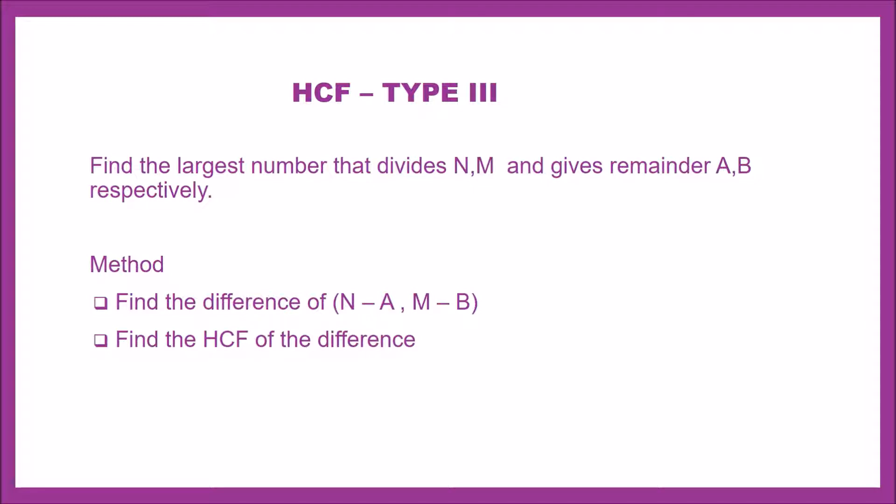When N divided gives remainder A, and M divided gives remainder B, first find the difference of N minus A and M minus B. Then find the HCF of this difference.